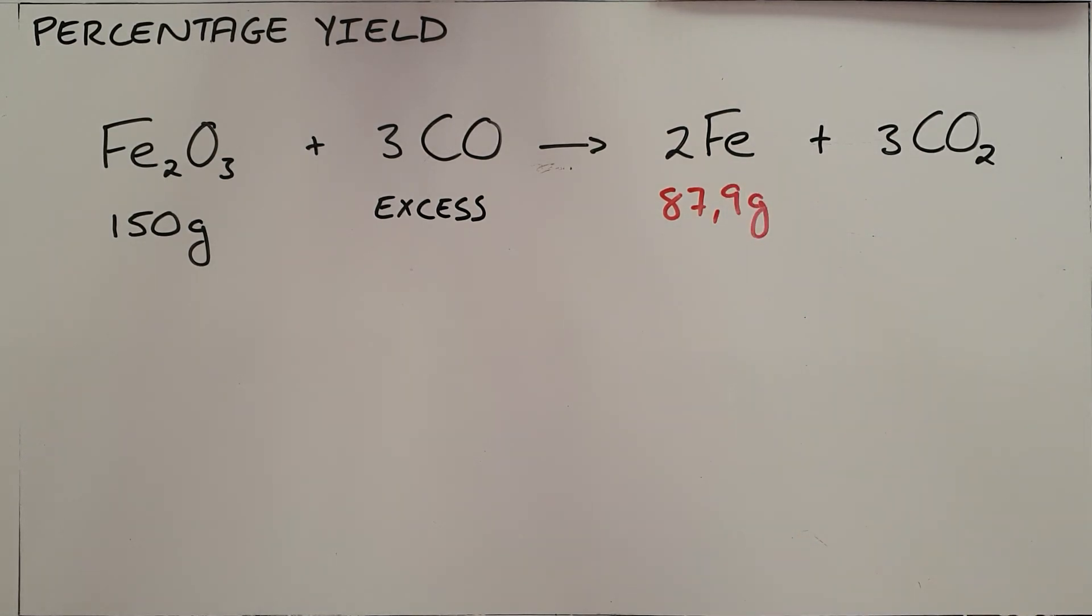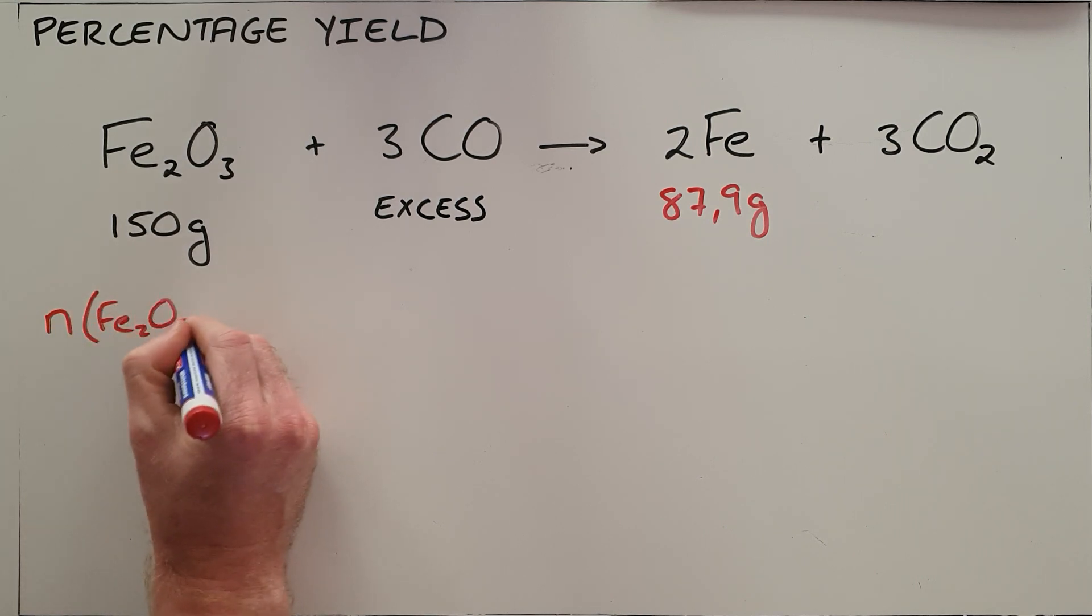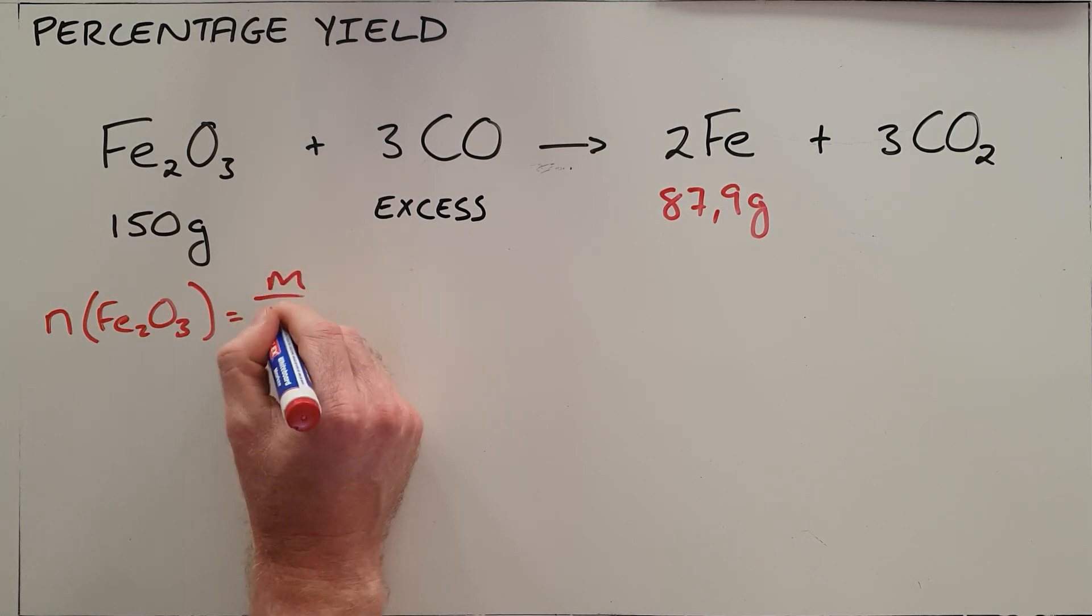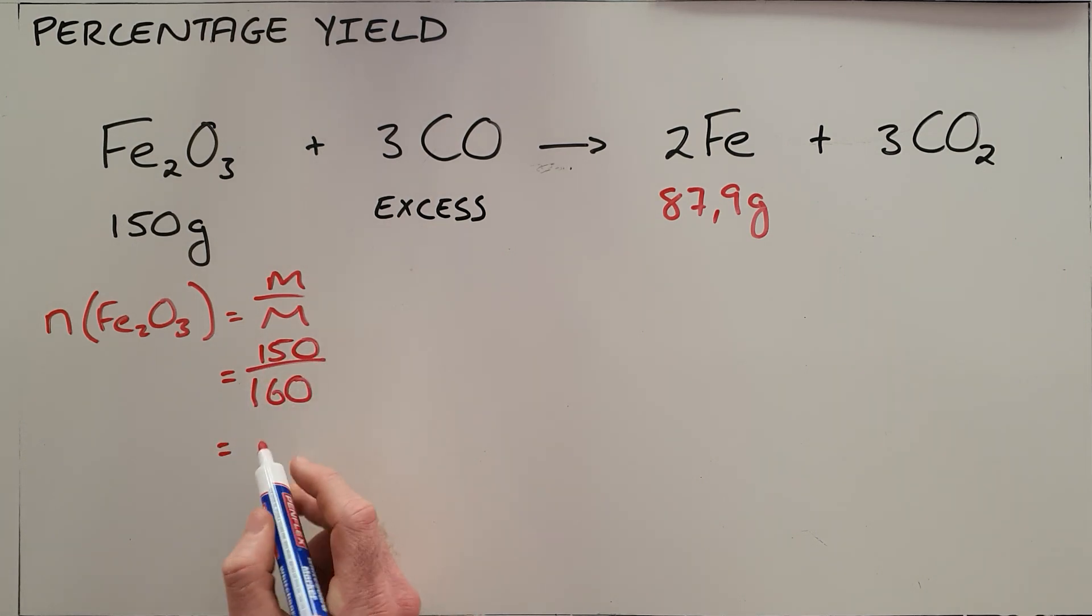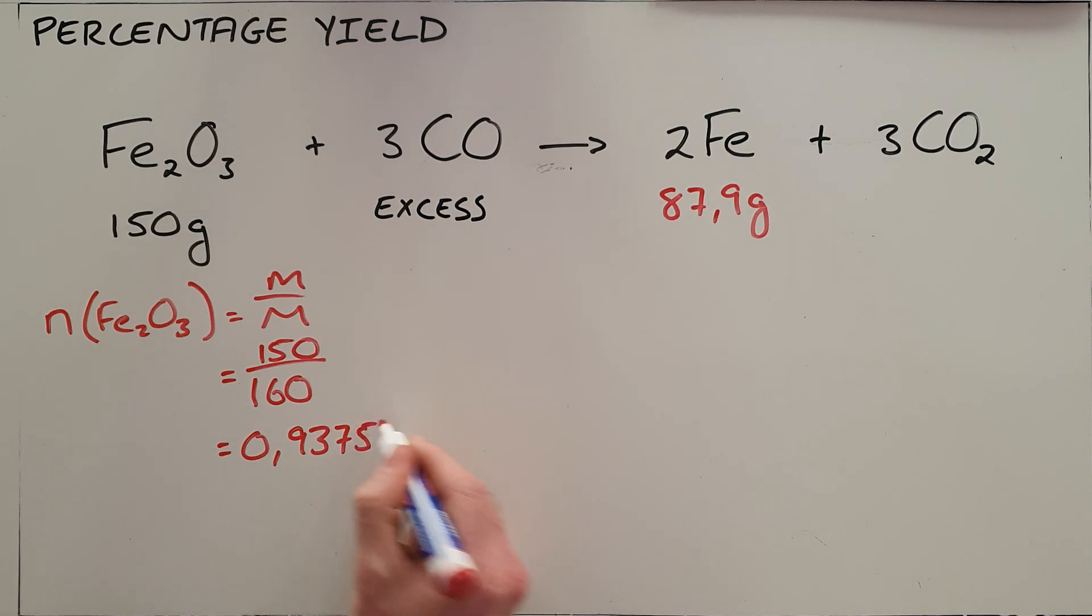So in order to calculate the yield, you start out by calculating how much you would expect to produce in our normal format, where we say the amount of iron oxide that we start with can be calculated using the given mass and the molar mass of that iron oxide—a given mass of 150 grams, a molar mass of 160 grams, which means that we are starting with 0.9375 moles of iron oxide.